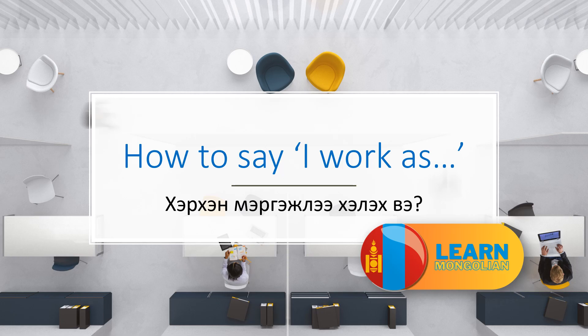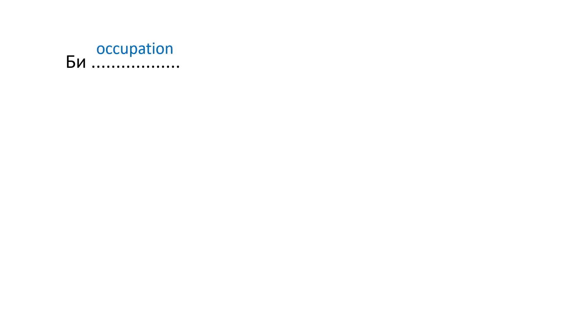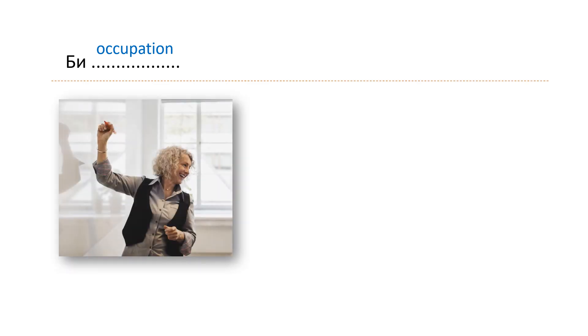Hello, today we will learn a sentence pattern to say your occupation in a full sentence. In English you say 'I am' and then your occupation. We use the same structure — you say 'I' and then your occupation. Let's see an example.